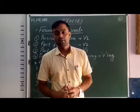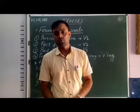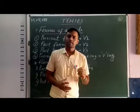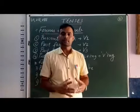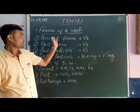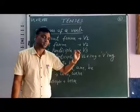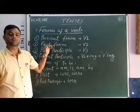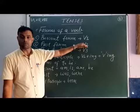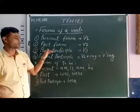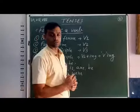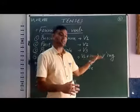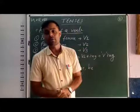There are four forms of the verb that we need to remember to understand tenses better. First, the first form of the verb is the present form, denoted as V1. The past form is V2, the second form. Third is the past participle, V3. And fourth is the present participle, which means the verb with -ing.